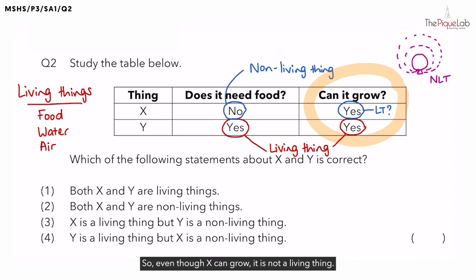So, even though X can grow, it is not a living thing. Because based on the first characteristic, which is X does not need food, we can confirm that X is a non-living thing.